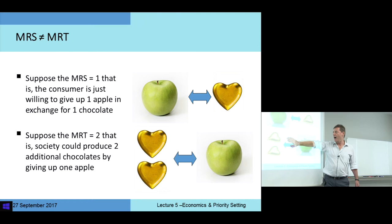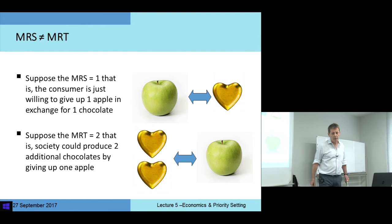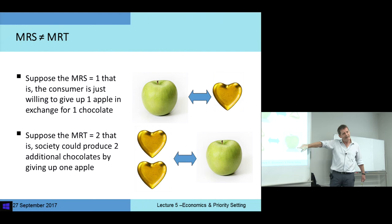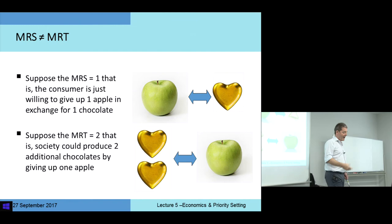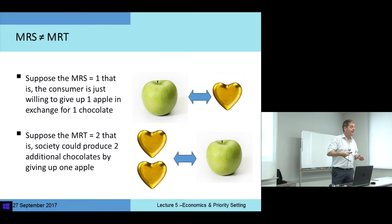Let's suppose the Marginal Rate of Transformation is equal to two — society could produce two additional chocolates by giving up or cutting back production of apples by one. This situation would not be optimal in the sense that it can be improved on. We produce fewer apples. Every apple less we produce, we need one chocolate to compensate the person losing their apple. But according to the MRT, the technology and inputs available are such that the resources freed allow us to produce two chocolates per apple reduction. But we only have to compensate the person with one chocolate — so just the opposite of our dead weight loss, we've got an additional chocolate as if from nowhere. That's because the MRS is not equal to the MRT — there's an opportunity to do better.